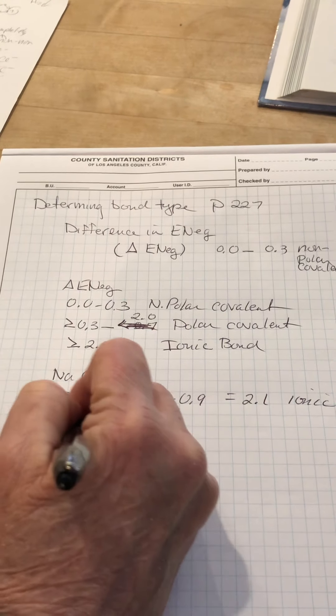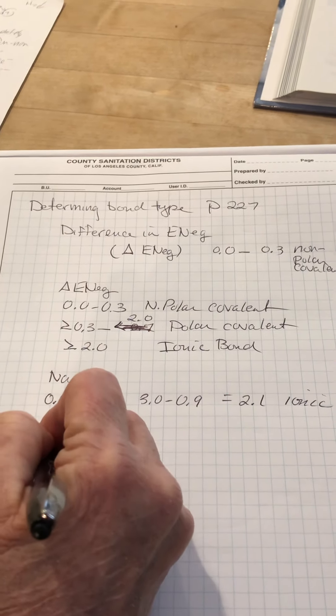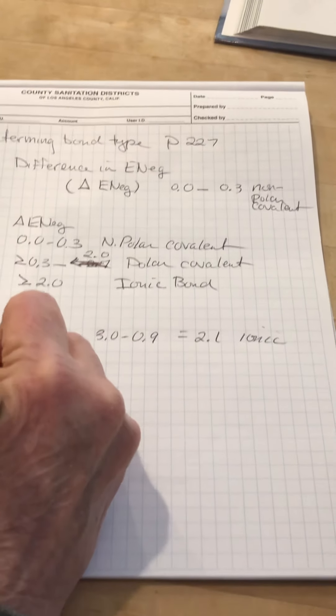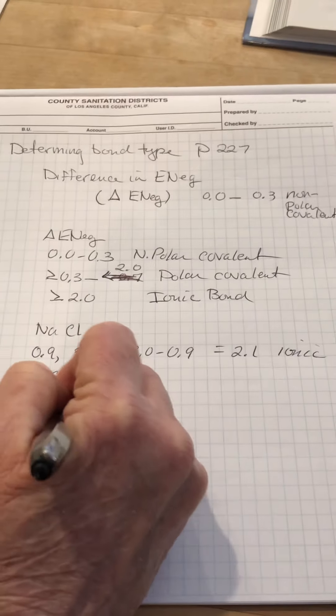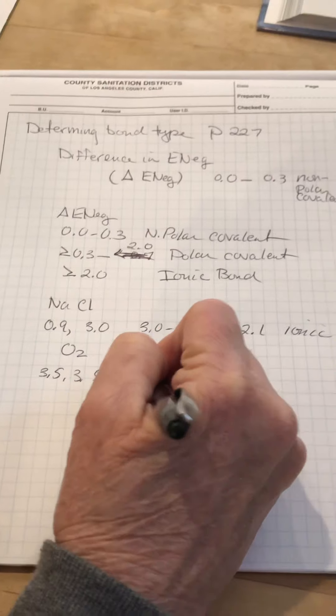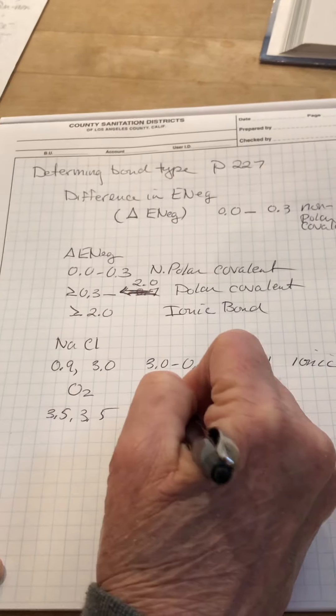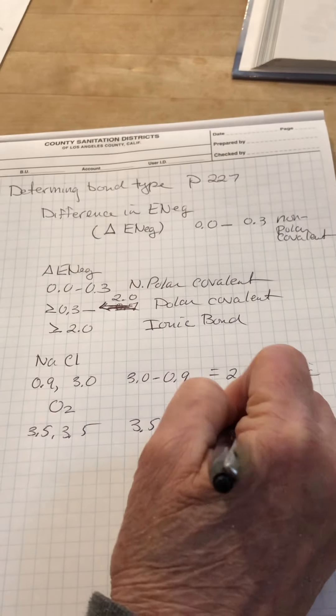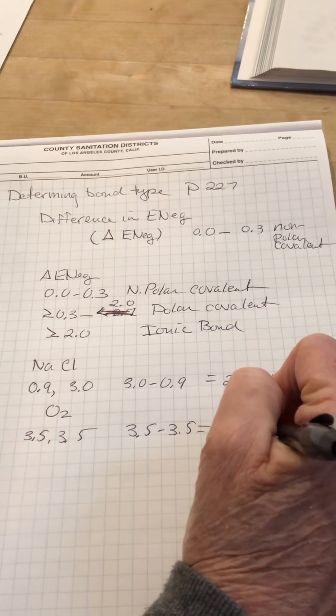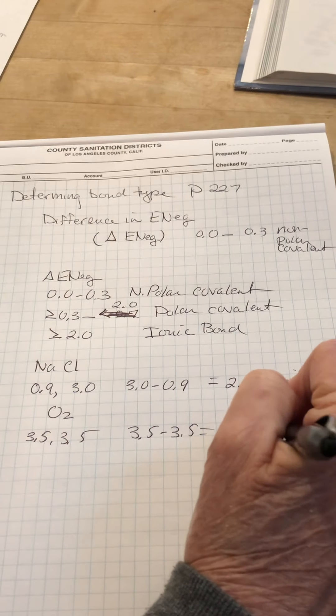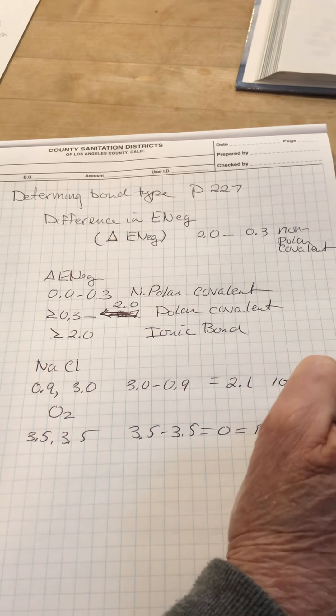If you look at oxygen, O2, each oxygen has an electronegativity of 3.5. So 3.5 minus 3.5 equals 0.